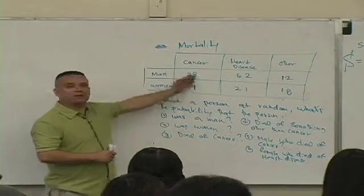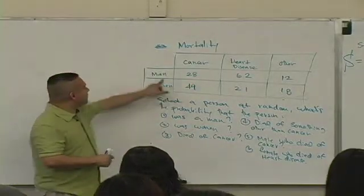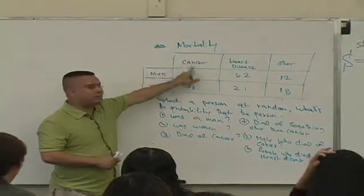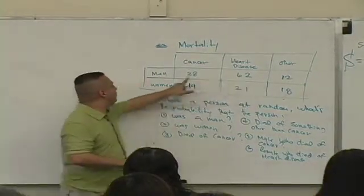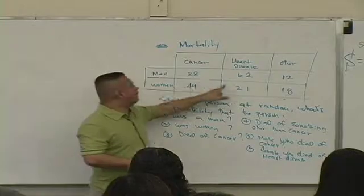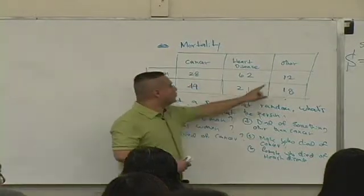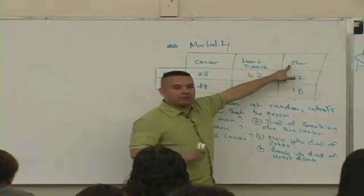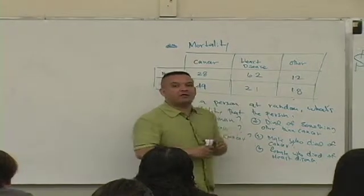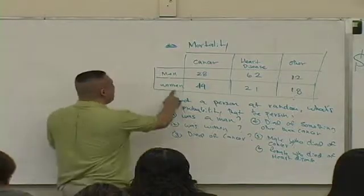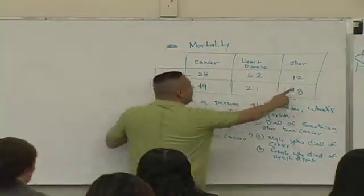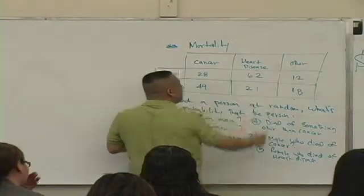You guys want to know what this chart means, what it says? It means that 28 men died of what? Cancer. 62. Who? Men died of heart disease. 12 died of something other. Stroke, whatever. Accident, you name it. What about women? 49 died of cancer. 21 died of heart disease. And 18 died of something what? Other.